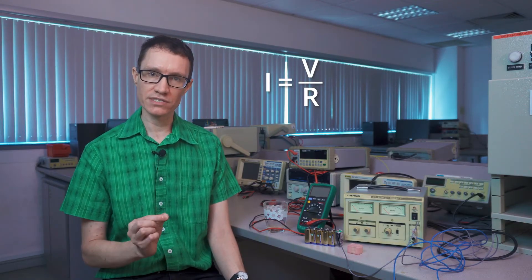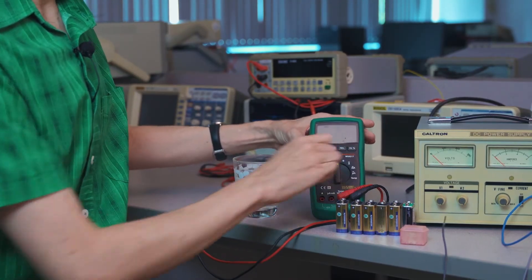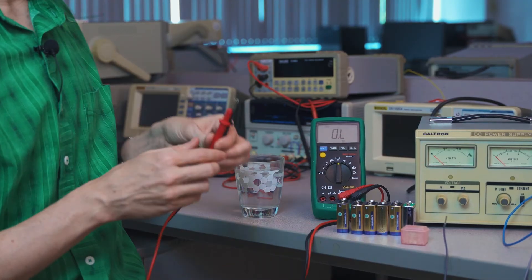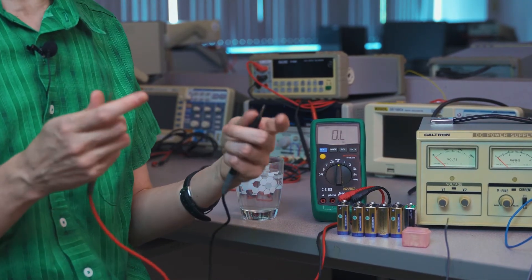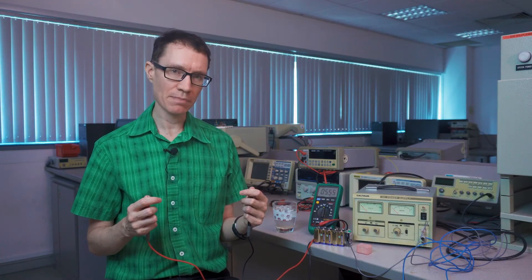That refers to the resistance of the human body in the event of a shock. Let's go ahead and measure it. I've got a multimeter right here. I'm going to turn it to ohms, and with each hand, I'm going to touch an electrode. Looks like the resistance of my body is about 5 mega-ohms.